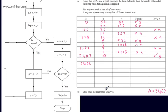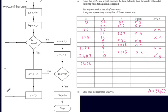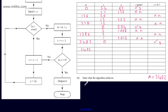We're now asked to state what the algorithm achieves. If you consider these two numbers, 3402 is the product of x and y. For a general guess — 60 times 50 is 3000 — so it makes sense. These multiplication algorithms often have one value halving while the other doubles. We can simply state that the algorithm computes the product of x and y.